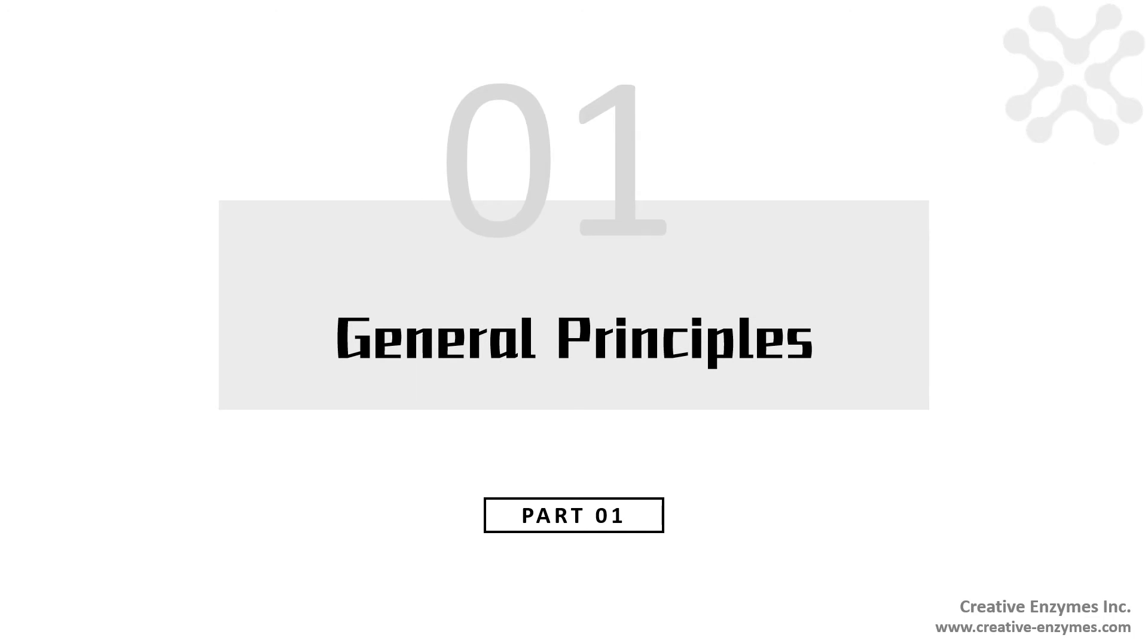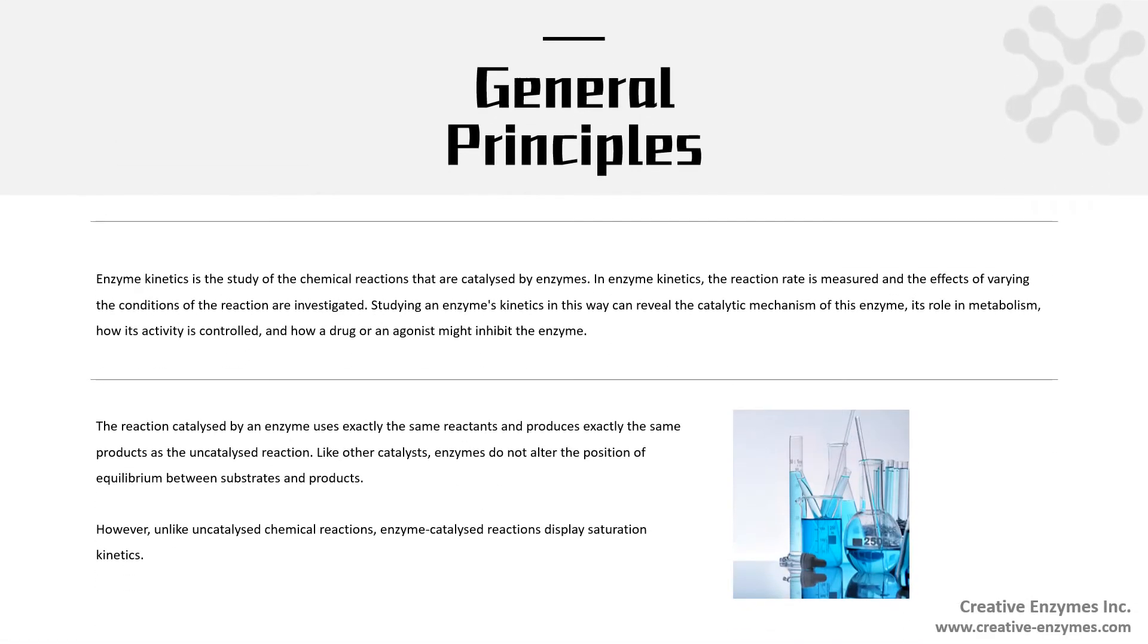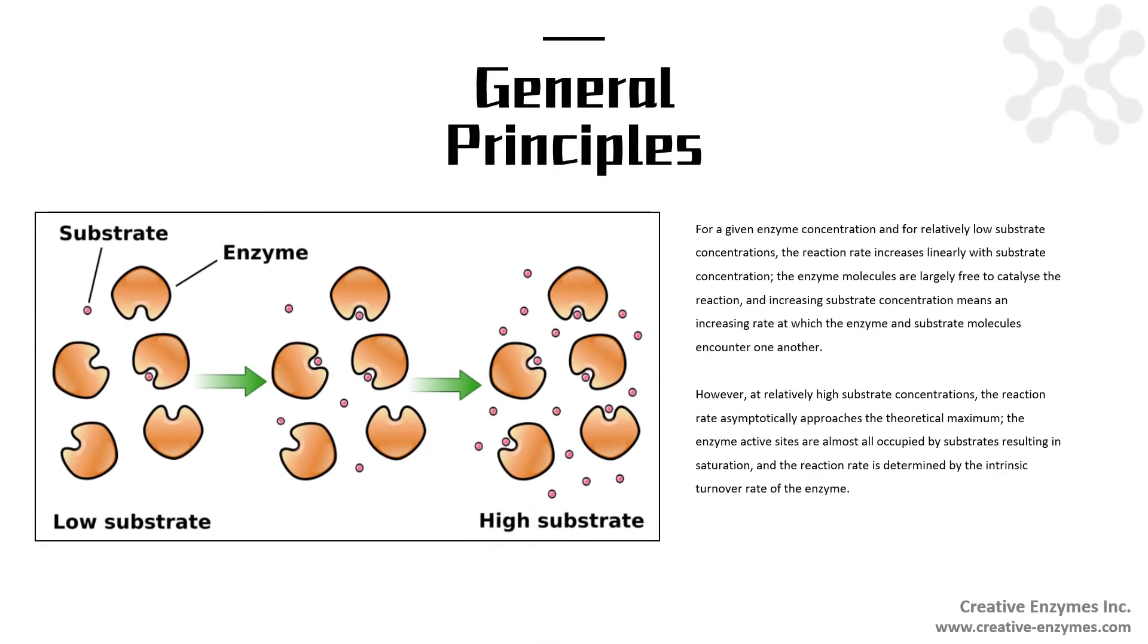General Principles. Enzyme kinetics is the study of chemical reactions that are catalyzed by enzymes. In enzyme kinetics, the reaction rate is measured and the effects of varying the reaction conditions are investigated. For a given enzyme concentration and for relatively low substrate concentrations, the reaction rate increases linearly with substrate concentration.